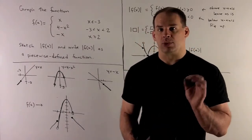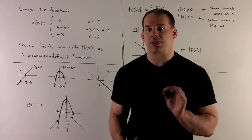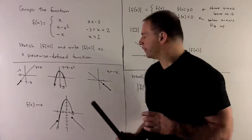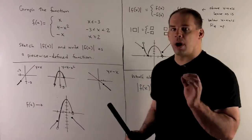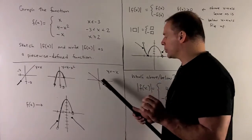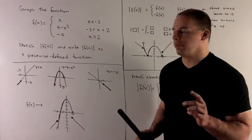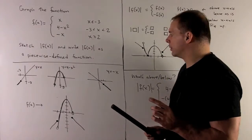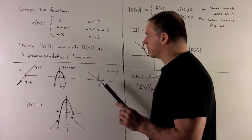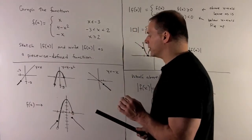Finally, we have y equals minus x — again a straight line through the origin, with slope minus 1. We only want the part where x is greater than or equal to 2, so we darken that part and keep the point x equals 2. Taking the three pieces and putting them together gives us the graph of f(x).